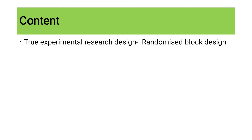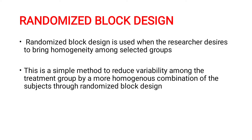Let's move on to the content. Under true experimental research design, we are going to discuss randomized block design. To be considered a true experimental research design, we need three criteria. The first is randomization — you have to randomly assign subjects to the group.